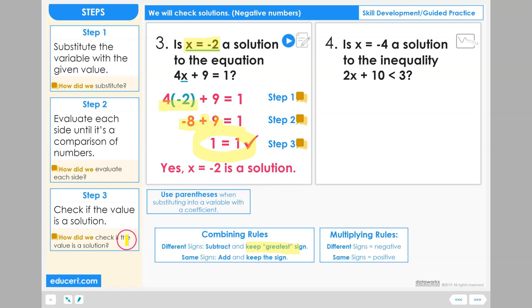How did we check if the value is a solution? To check that the value was a solution, we took a look at the final number comparison. Because it was a true comparison, 1 equals 1, then that tells us that the value that made this comparison, which was negative 2, is a solution to our original equation.